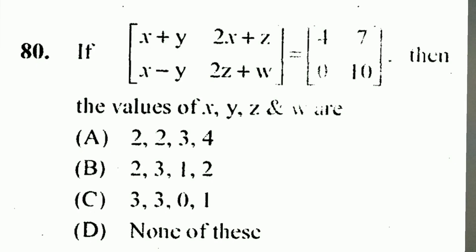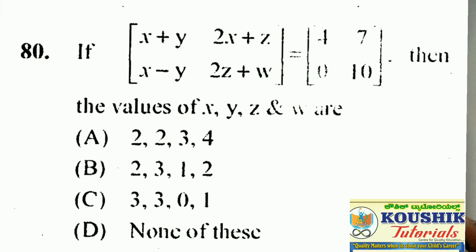The matrix [x+y, 2x+z; x−y, 2z+w] is equal to the matrix [4, 7; 0, 10]. Then, find the values of x, y, z, and w.